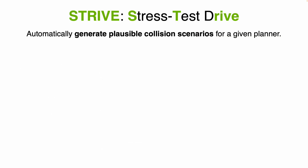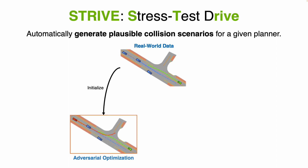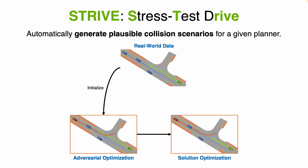In this work, we introduce Strive, a method to automatically generate plausible collision scenarios that attack the planning part of the AV stack. Starting from a regular, real-world scenario where a given planner behaves as expected, Strive jointly optimizes all agents in the scene to cause a collision with the planner. A second optimization is then performed to find a solution — how the planner should have behaved to avoid the collision. If the solution optimization succeeds, the scenario is considered useful.